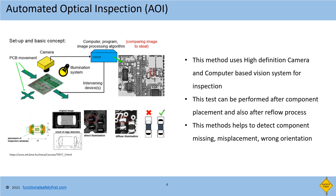The next method is automated optical inspection. As the name says, this uses a high definition camera and a computer-based vision system for inspection. This test can be performed at two stages: one after the component placement process, and second after the reflow process. This method helps to detect missing, misplaced, or wrong orientation of components. The image at the bottom left shows the inspection window shown by the computer vision system, and the image at the bottom right shows wrong orientation of hardware components detected, as well as correct and wrong soldering in the component.